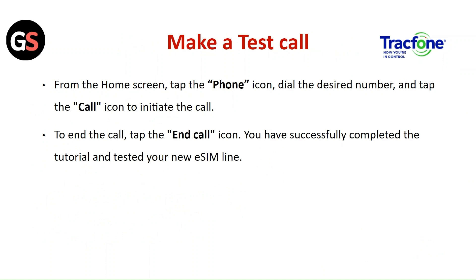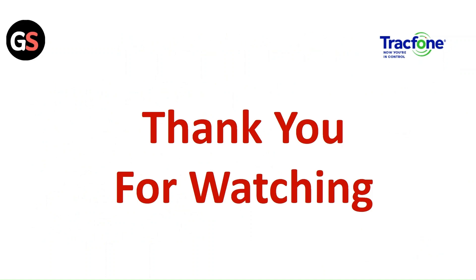Make a test call from the home screen: tap on the Phone icon, dial the desired number, and tap the Call icon to initiate the call. To end the call, tap the End Call icon. You have successfully completed the tutorial and tested the new eSIM line. Thank you for watching — please like this video and subscribe to our channel.